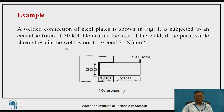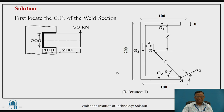Let us consider an example of a welded connection between two plates connected by a C-section — two horizontal welds having 100 mm length and one vertical weld having 200 mm length — subjected to an eccentric load of 50 kN at the end. The CG of this section will be somewhere inside, and the load acts away from it, making this a case of eccentric load acting in the plane of the weld.